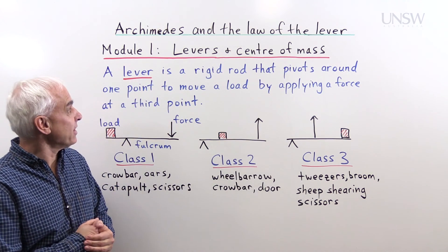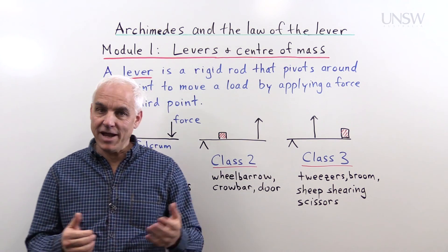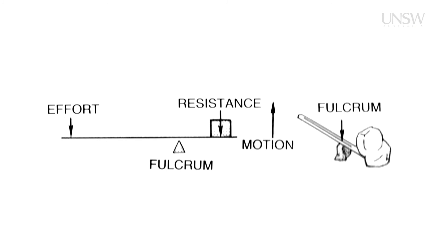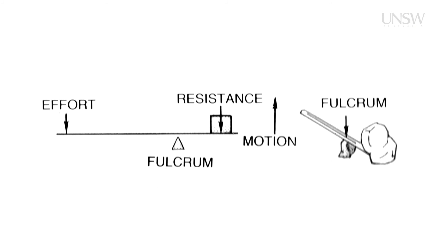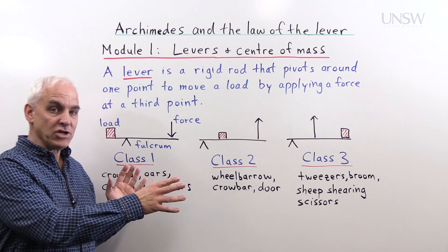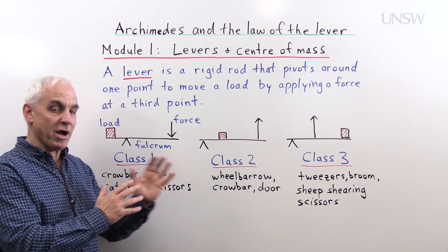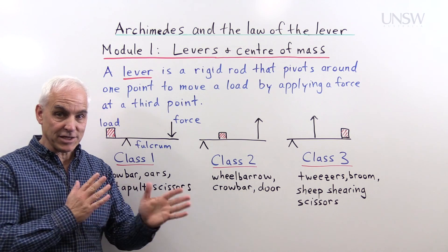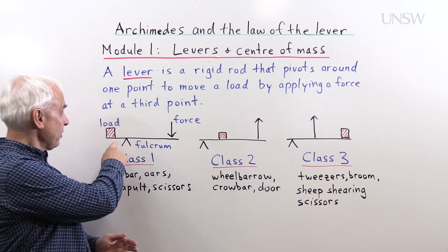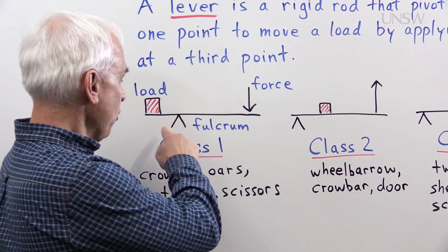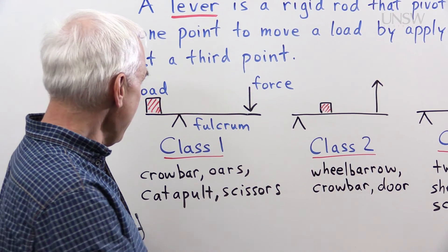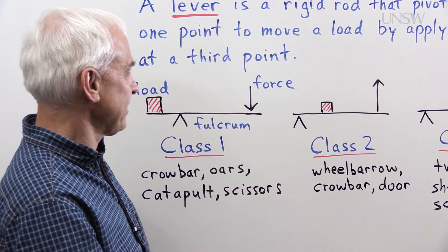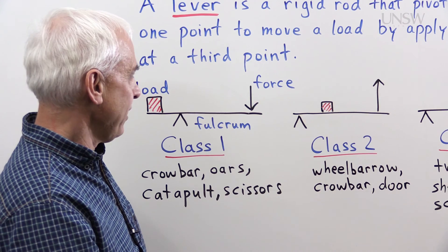So in our first module today, we're going to look at levers and centers of mass. What is a lever? Well, a lever is a rigid rod that pivots around one point to move a load at a second point by applying a force at a third point. And there are a number of different configurations that are distinguished by the relative positions of these three points. So the pivot point is often called the fulcrum, and denoted by this little triangle here. And the load here is this box, which is some kind of mass, and the force is represented by this arrow.